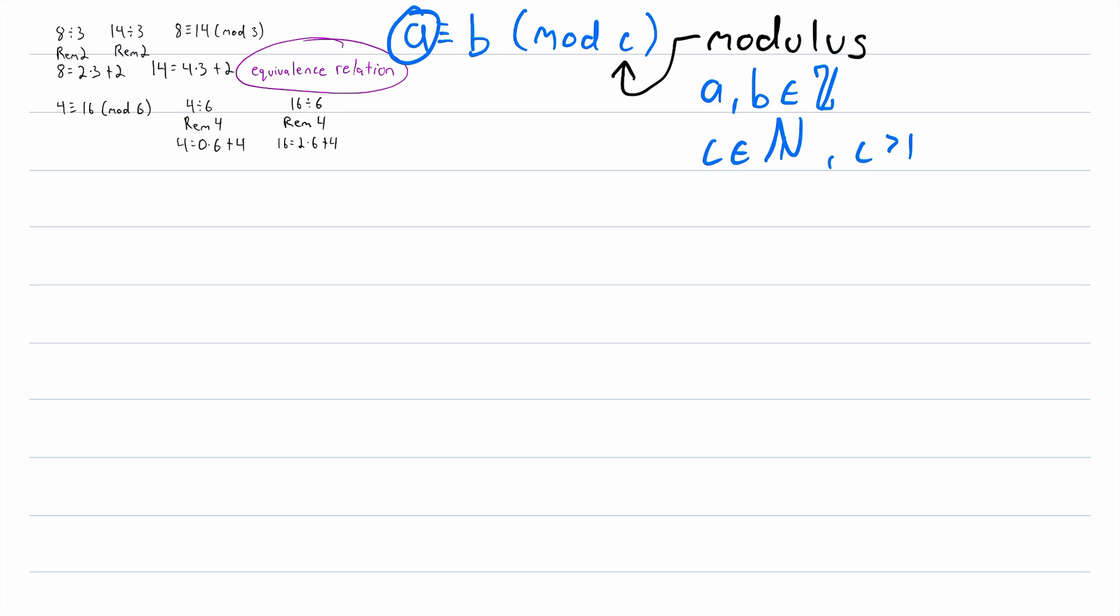But there's also another equivalent definition of modular congruence that is often used and often useful. This other definition says that a is congruent to b mod c if and only if c divides a minus b. This notation c divides a minus b just means that a minus b is an integer multiple of c. The two definitions we have stated are equivalent definitions, but I think this one is a bit less ambiguous because the other definition uses the word remainder, and people don't always mean the exact same thing by the word remainder. So let's see this definition in action.